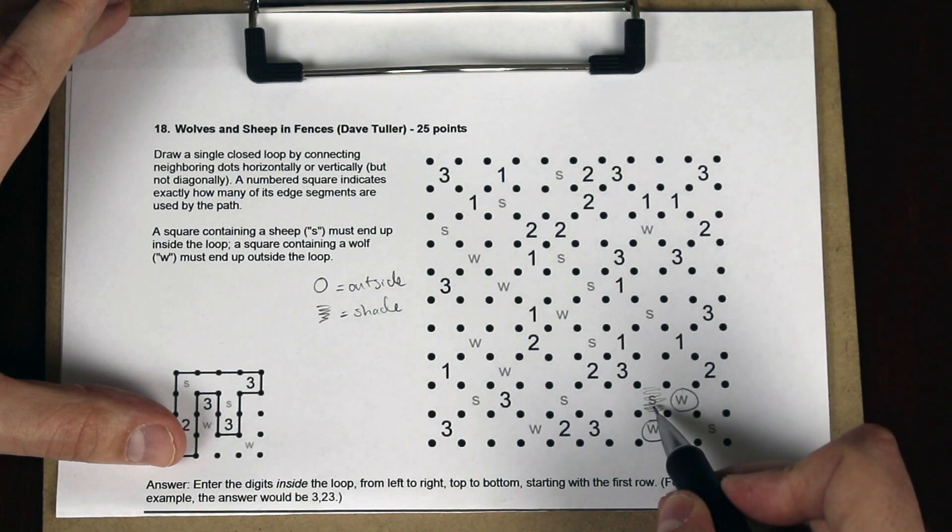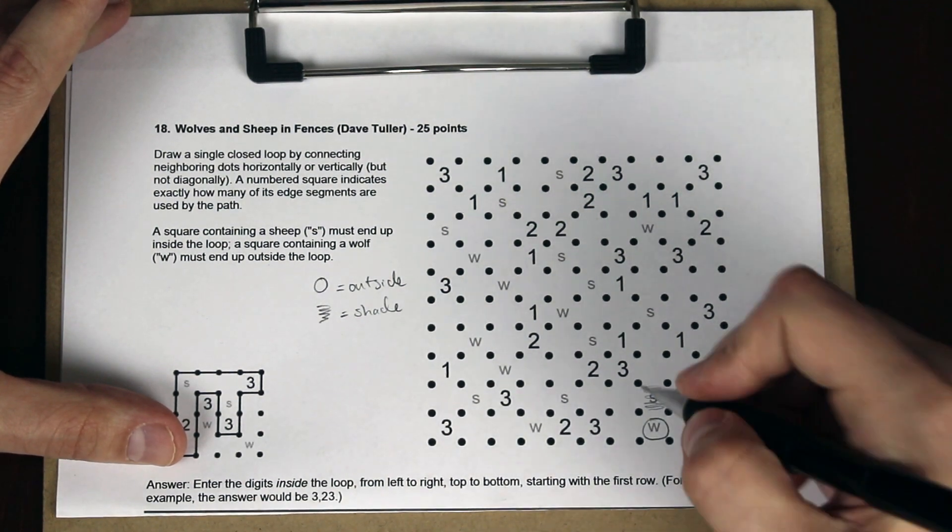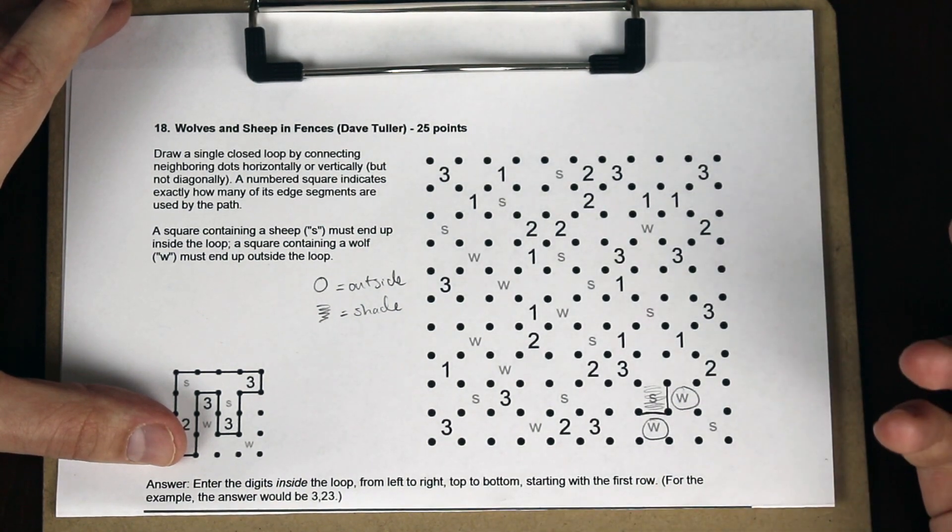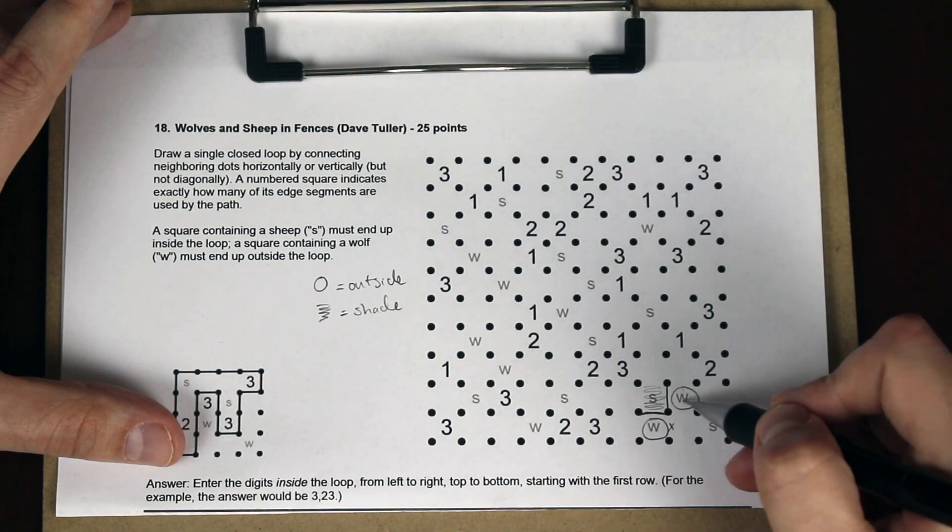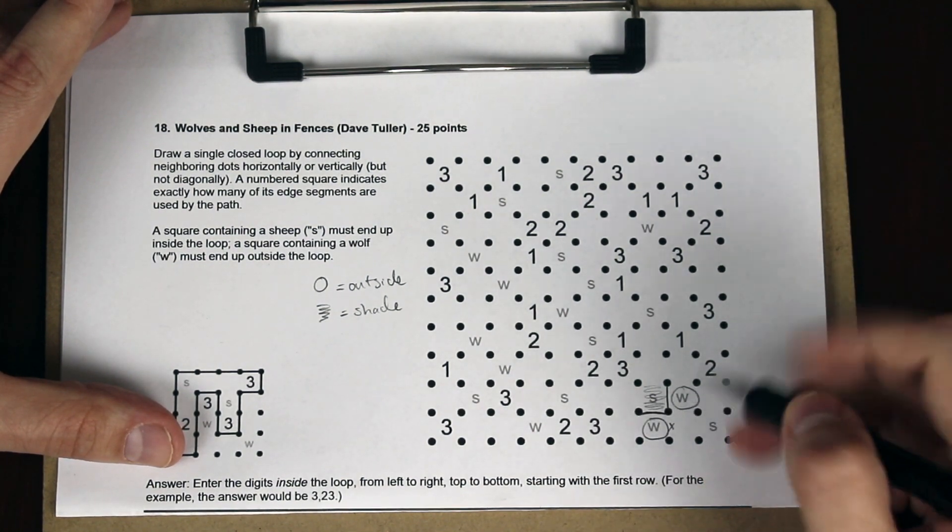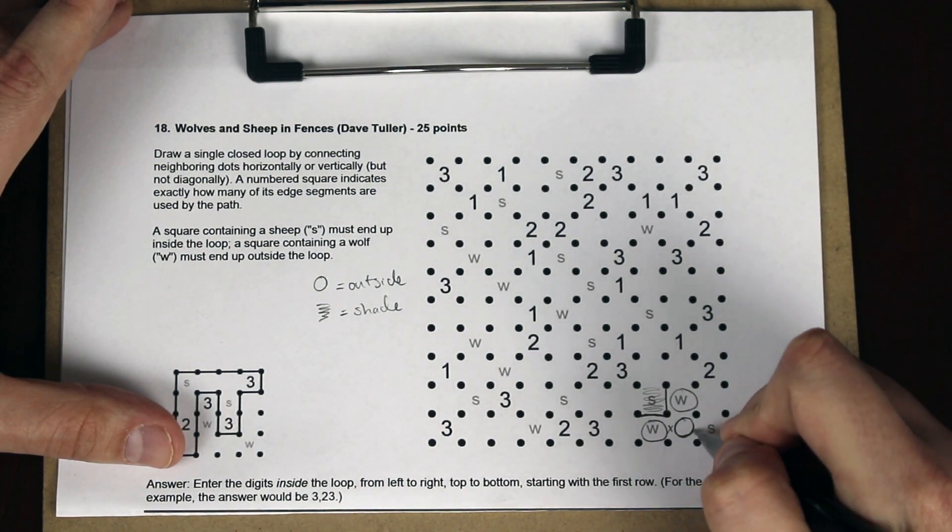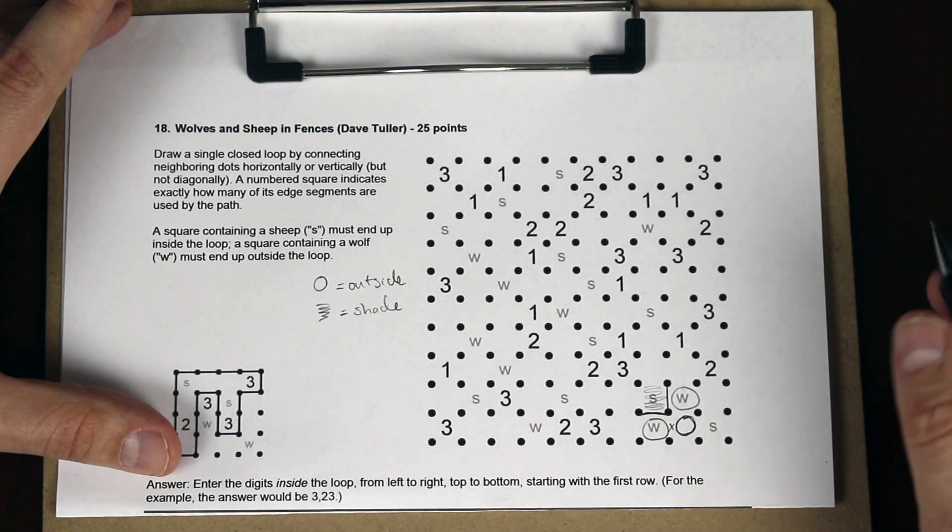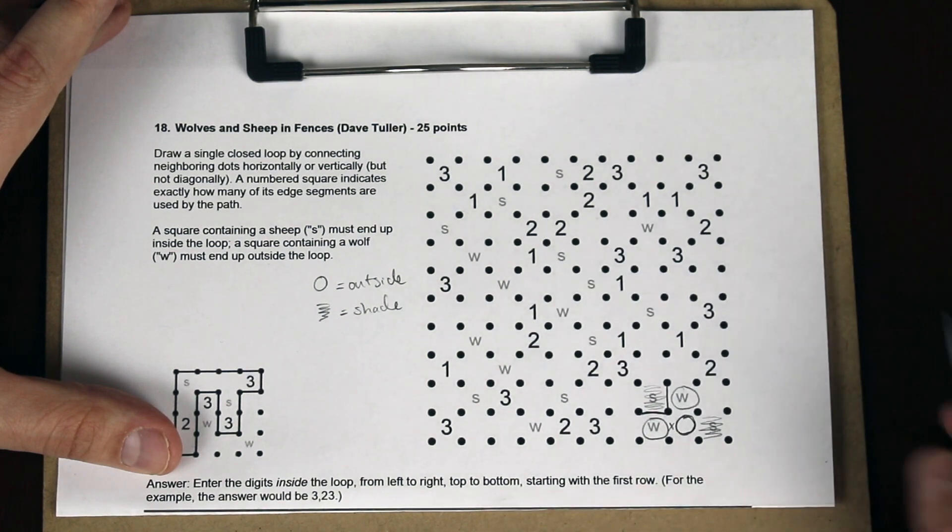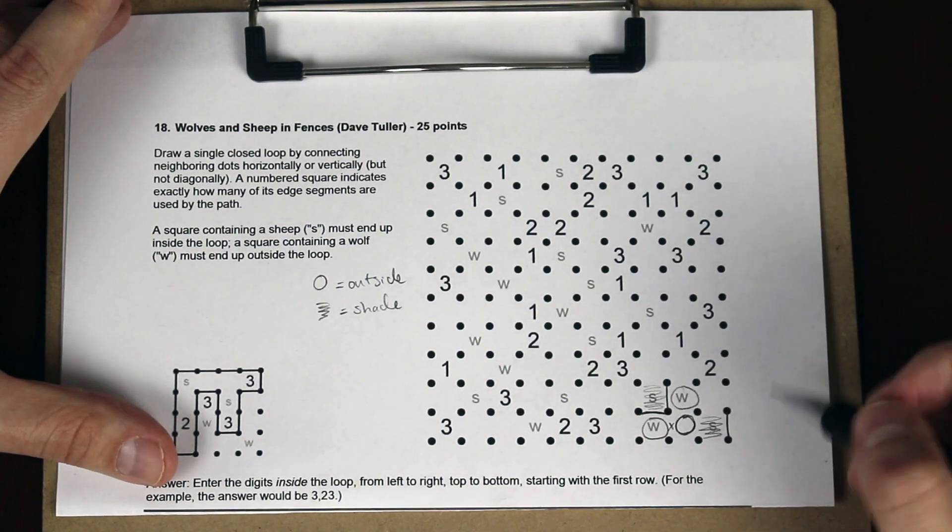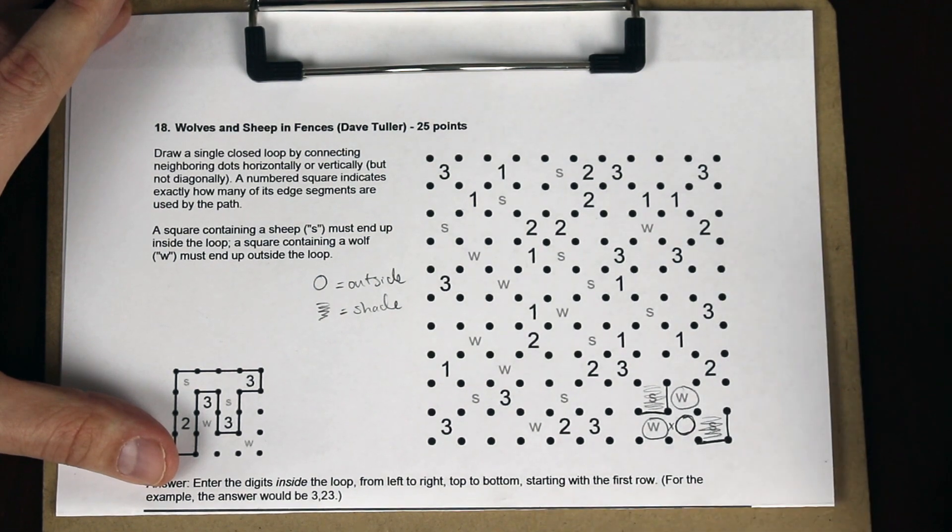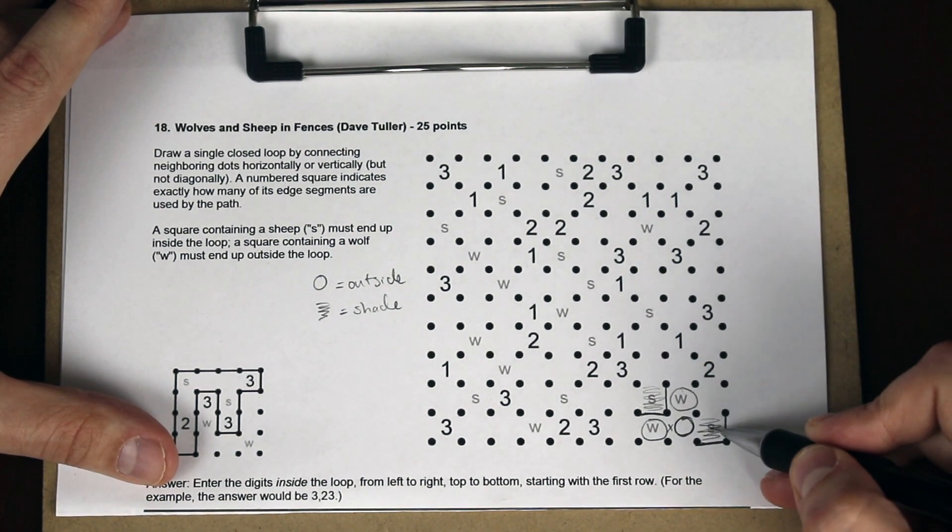Now, whenever we have an inside part of a loop next to an outside part of the loop, we know we have to have a line between it. That line is what divides the inner loop from the outer loop. And note that just like a cave puzzle, we can't have checkerboard patterns. So that needs to be outside the loop as well. This sheep needs to be inside the loop. And since it's on the edge, it means that we have to fill in this edge here, and this edge there. Otherwise, it would be outside the loop.